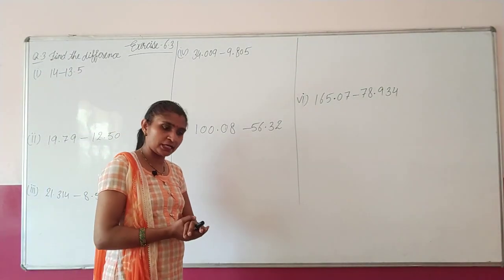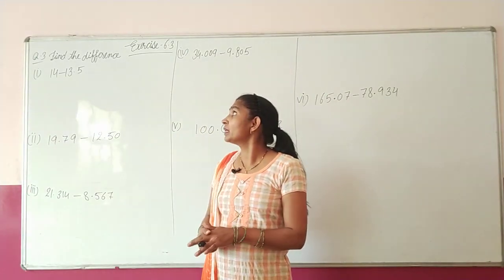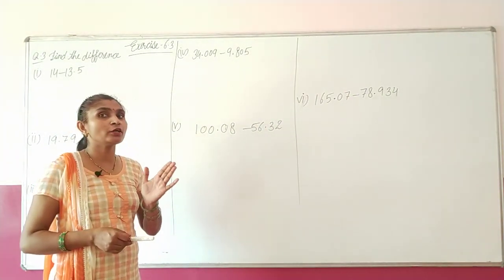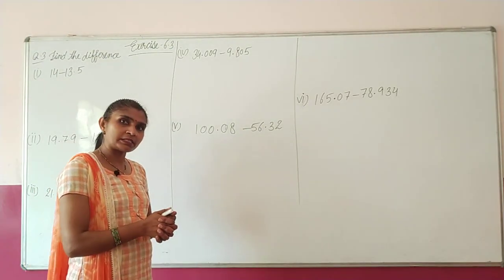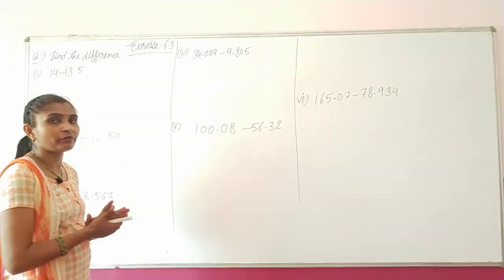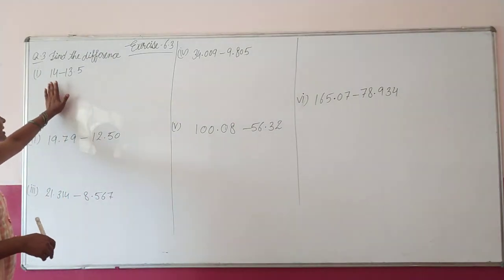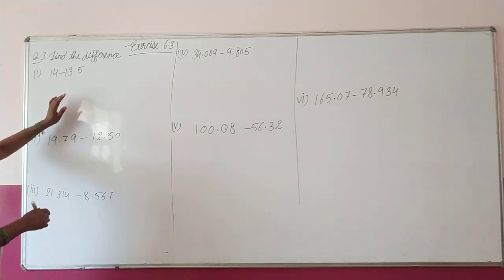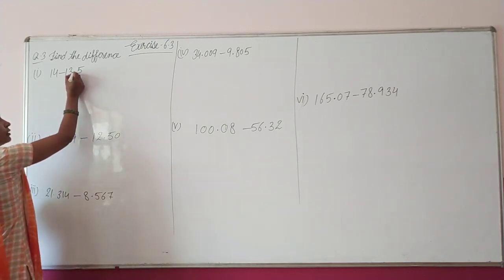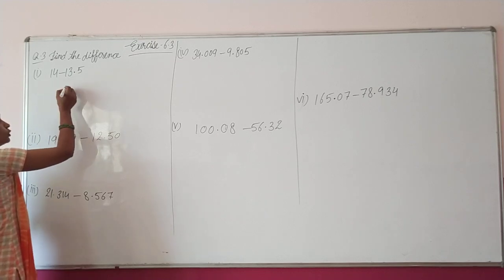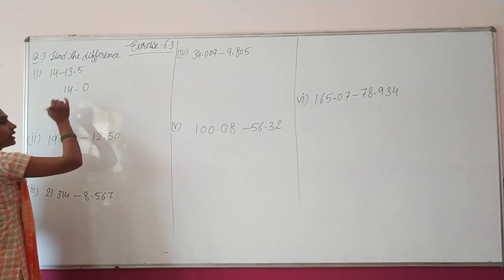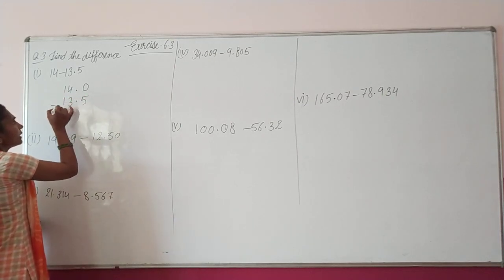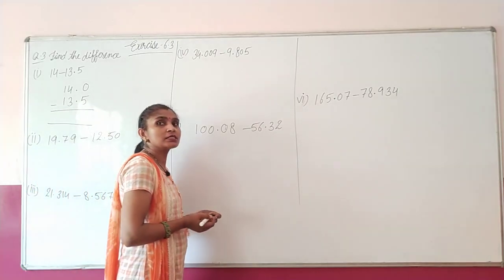Questions 1 and 2 had addition. Now question number 3 says 'find the difference.' Wherever the word 'difference' appears, it means we have to subtract two numbers — bigger minus smaller. So first sub-part: 14 minus 13.5. Since 13.5 has one decimal digit, we write 14 as 14.0 to make the digits like. Now we do subtraction.